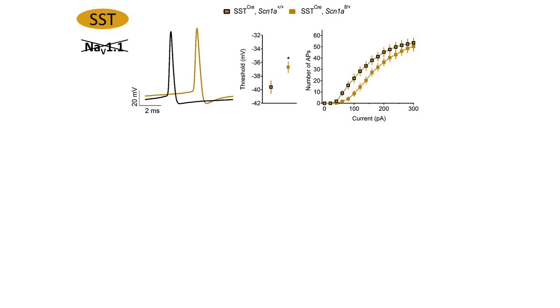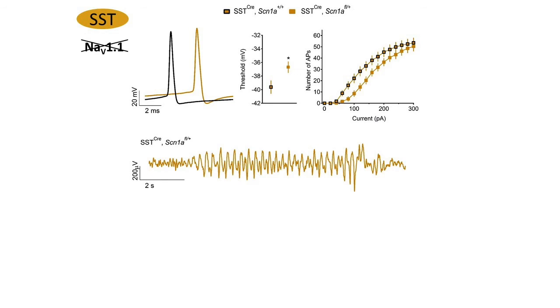Deletion of Nav1.1 selectively in somatostatin-expressing interneurons also led to increased threshold and reduced excitability, demonstrating the importance of Nav1.1 for the excitability of multiple types of interneurons. Dysfunction of somatostatin-expressing neurons was also sufficient to cause epilepsy with thermally induced seizures as well as spontaneous abnormal cortical activity. Additionally, mice with selective deletion of Nav1.1 in somatostatin-expressing interneurons were hyperactive and traveled longer distances in the open field test.